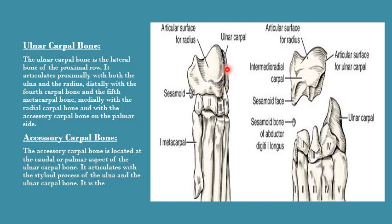The ulnar carpal bone is present at the lateral aspect of the forelimb. Medially it articulates with the radial carpal bone. Laterally it has no articulation, as it is at the lateral-most aspect. Proximally it articulates with both the radius and ulna bones — as its name indicates it is ulnar carpal, so it articulates with the ulna, but along with the ulna it also articulates with the radius.